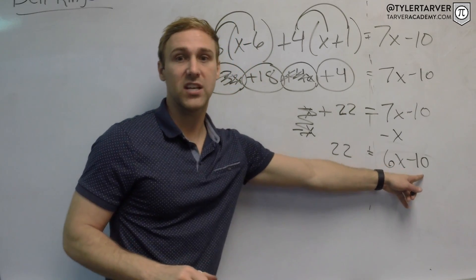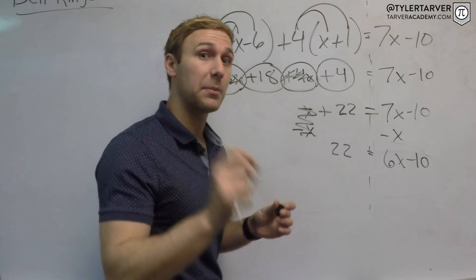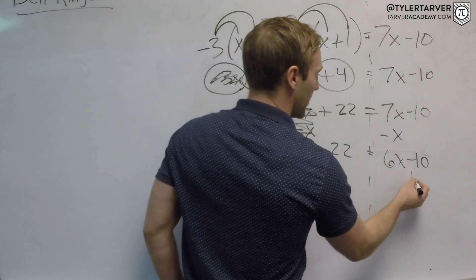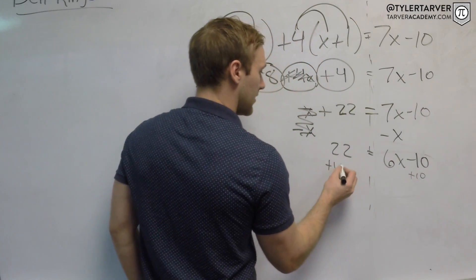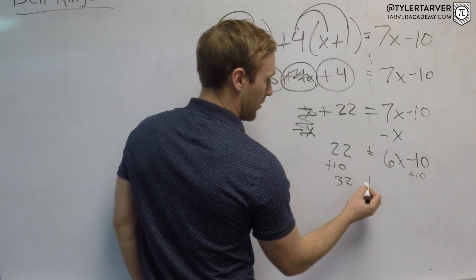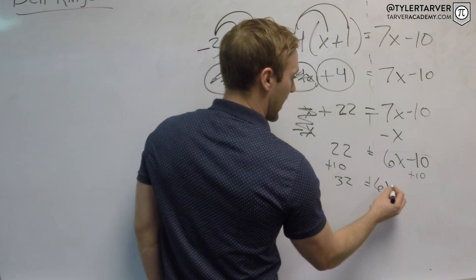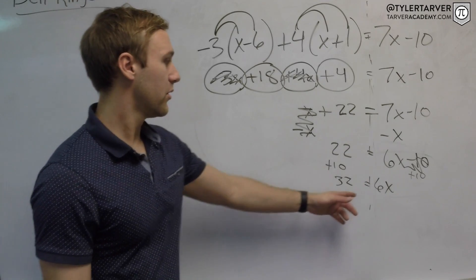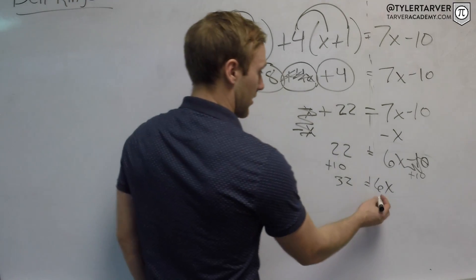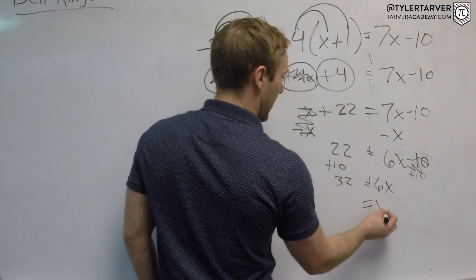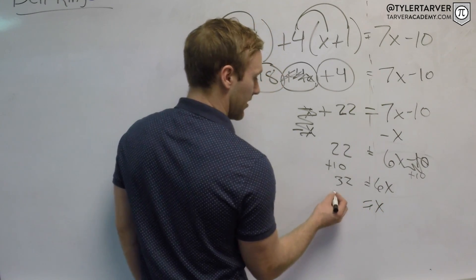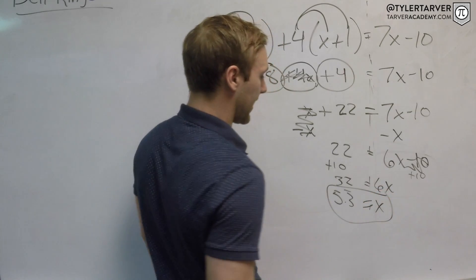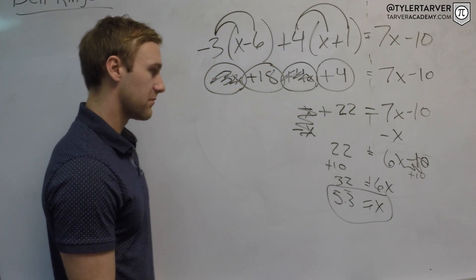Now, I've got to get that negative 10 to this side. What's the opposite of minusing 10? Adding 10. Very good. So add 10 to both sides. That would be 32 equals 6x. All right? Now I need to divide by 6. So divide by 6 and that would be x equals 5.3 repeating. I don't know why I did a weird one that had something like that, but that's what it is.